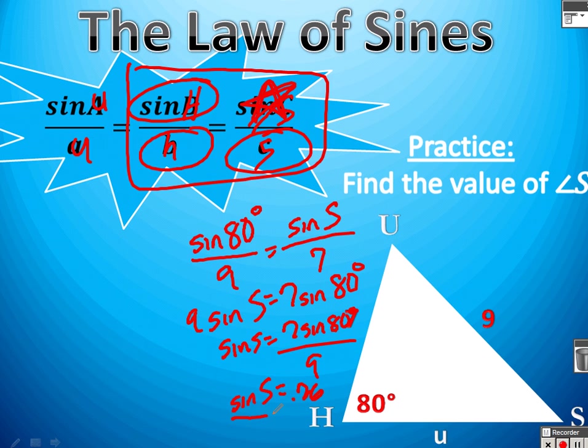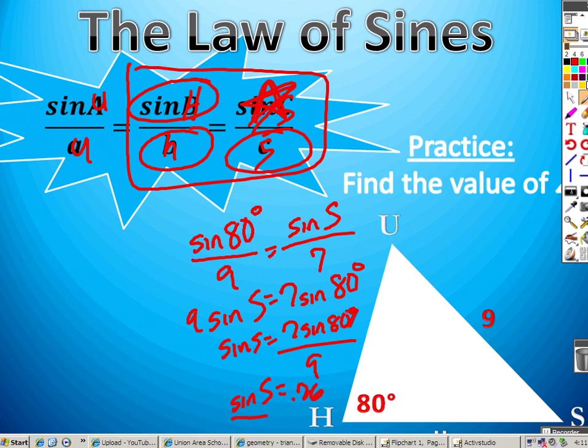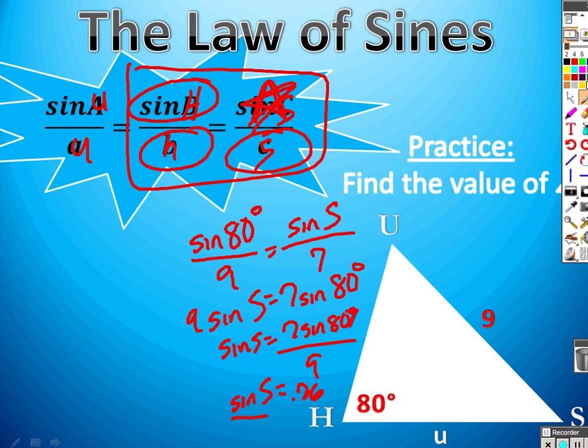To change that, to be able to get S by itself instead of sine of S, this is where we need to do our inverse sine operation. Take the inverse sine of both sides. That's going to leave us just with S, and then you just plug in what inverse sine, second sine of 0.76 is. And you should get about 50 degrees for this one, 49.9.